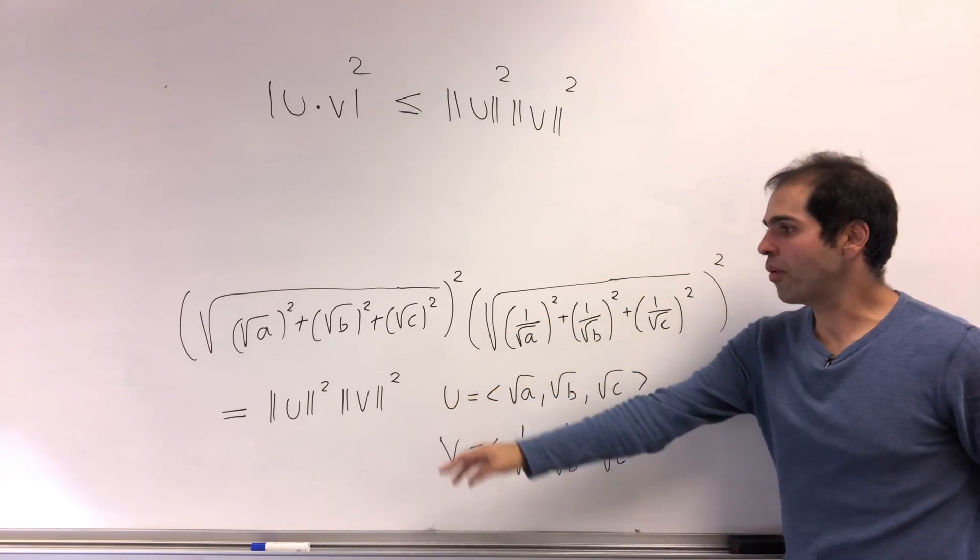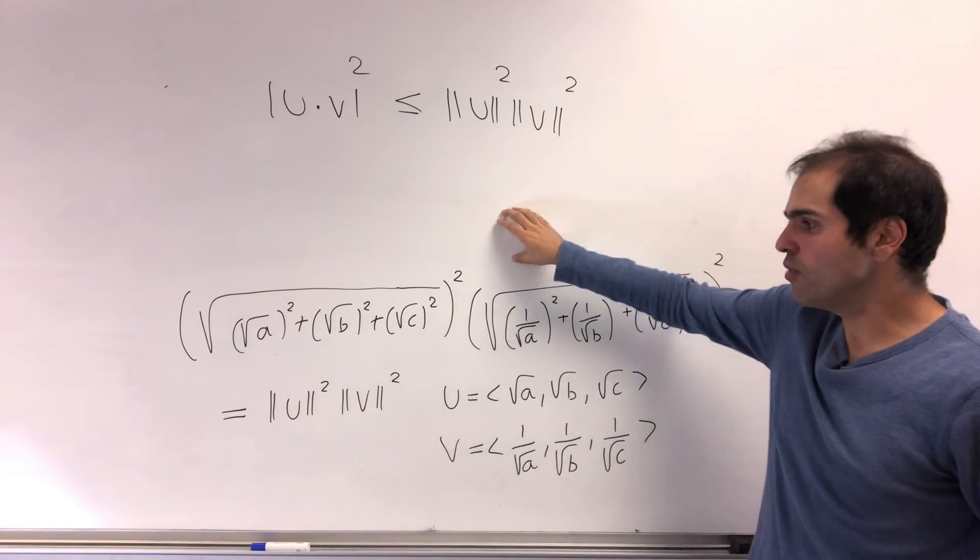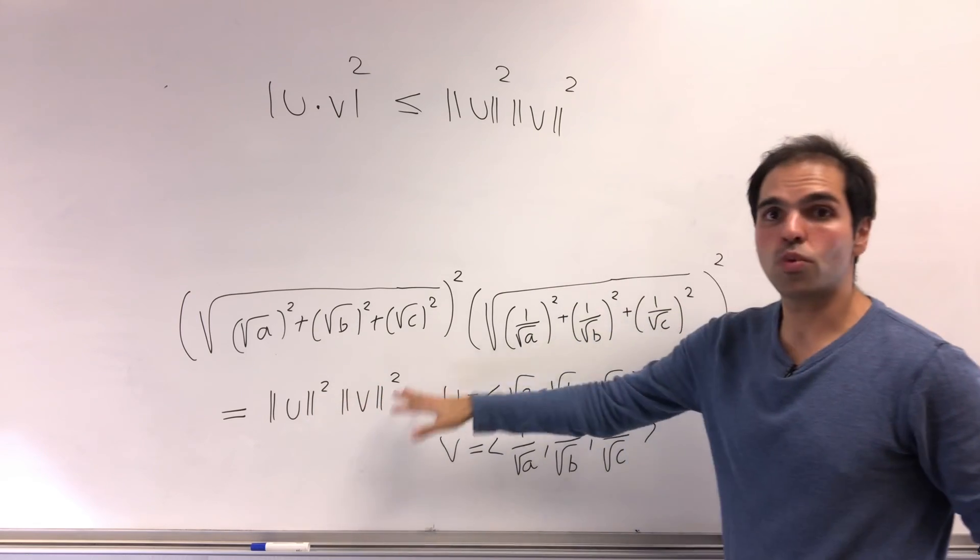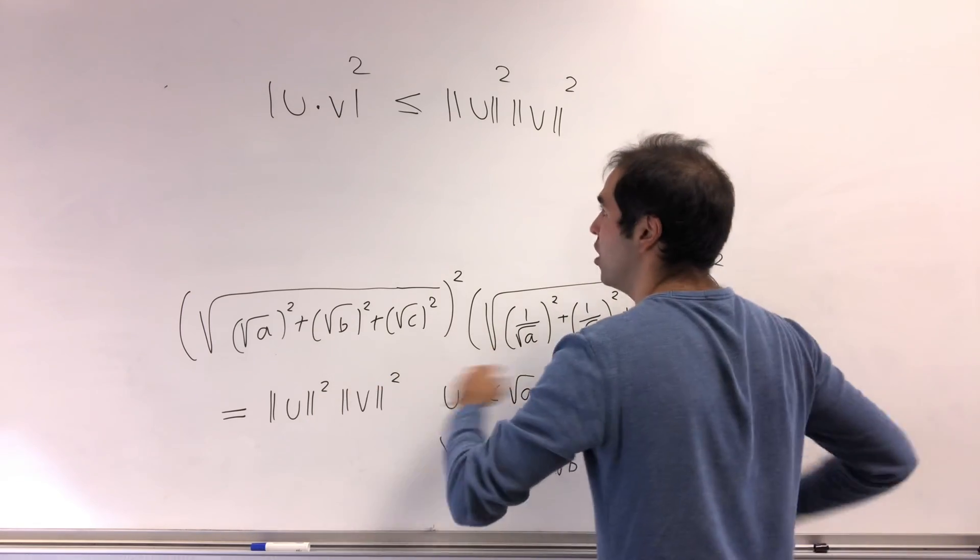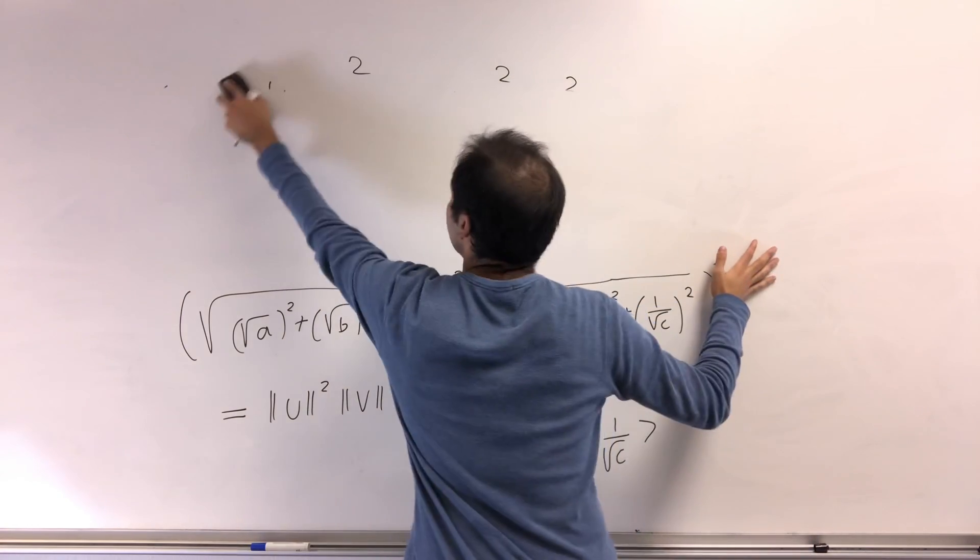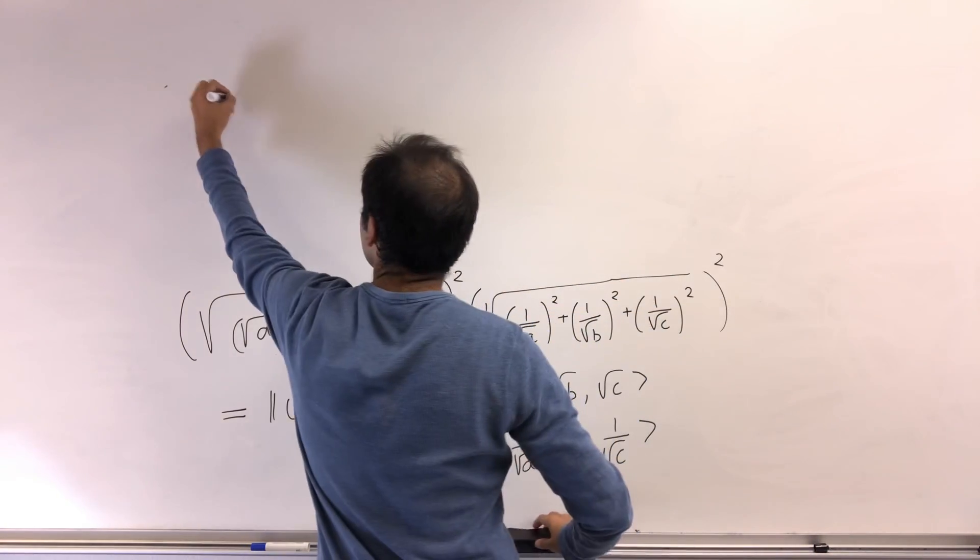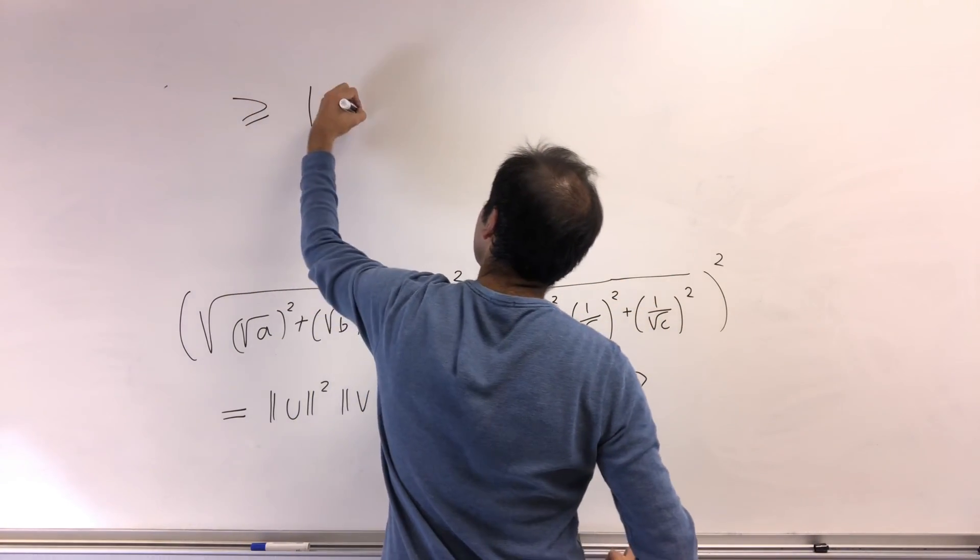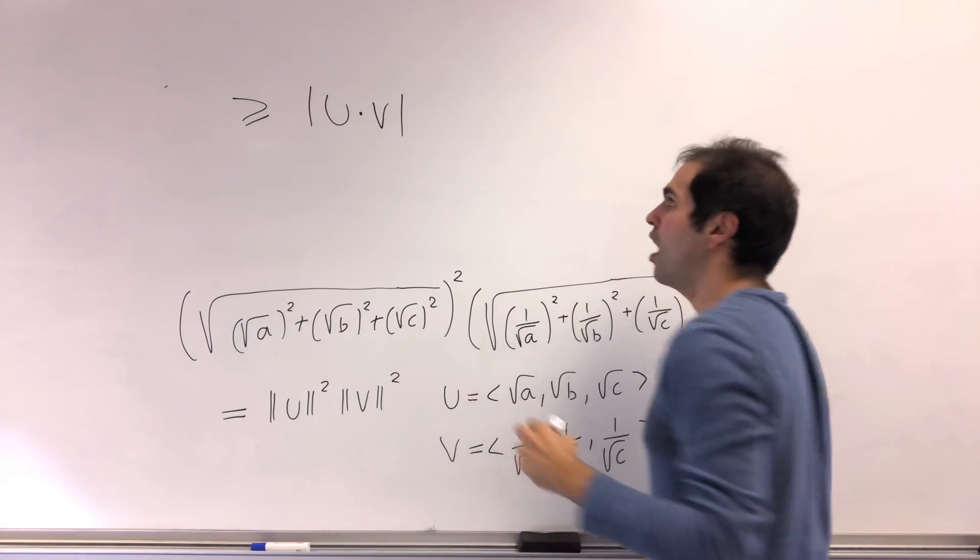So now going back to our problem, the quantity that we wanted is length of u squared times length of v squared, which now becomes greater than or equal to (u·v)².